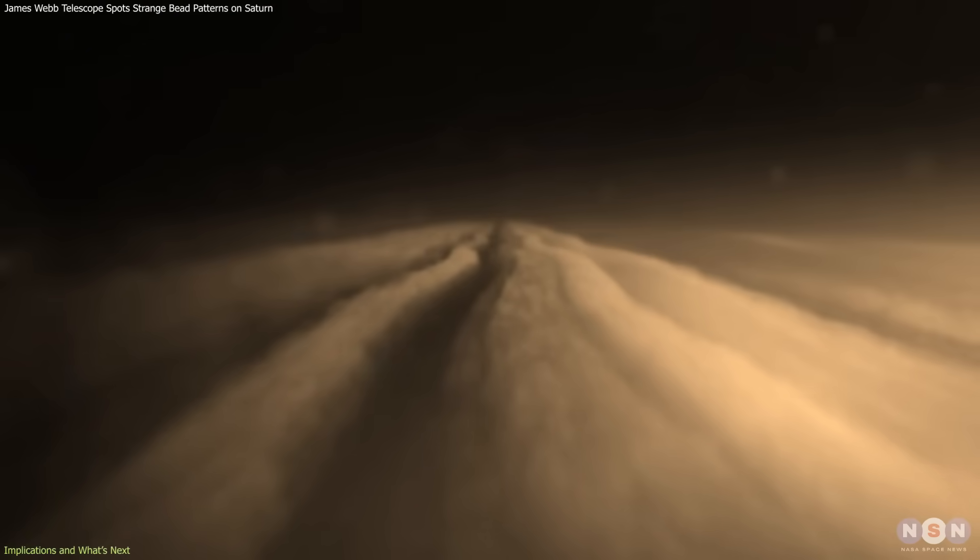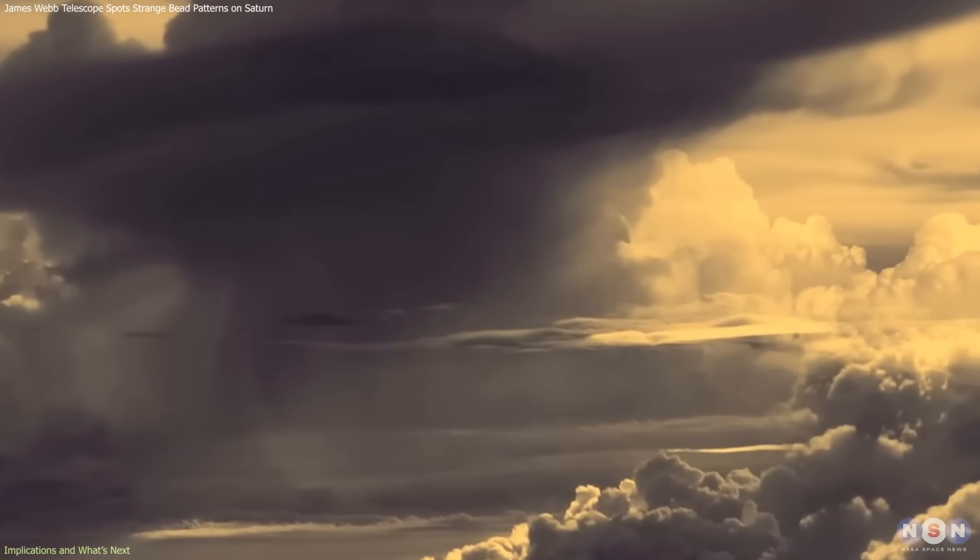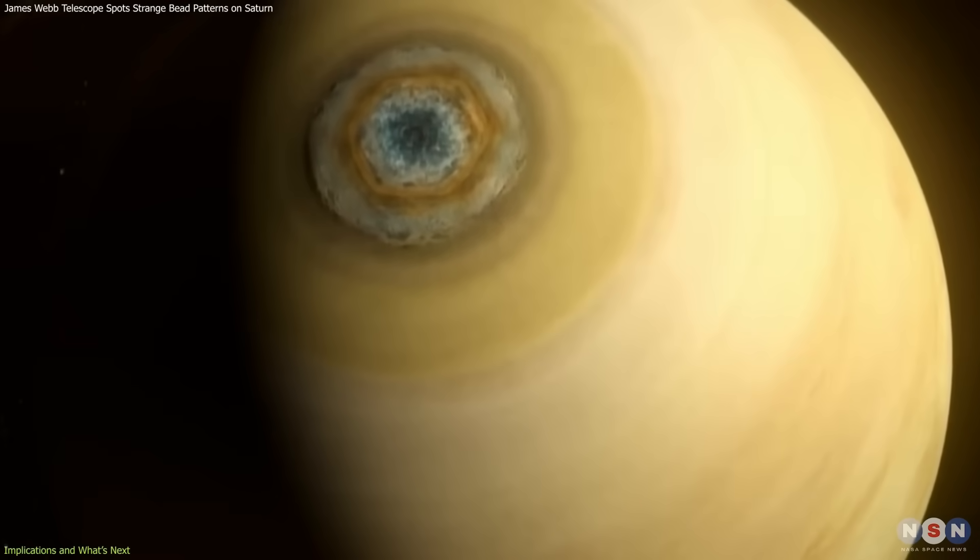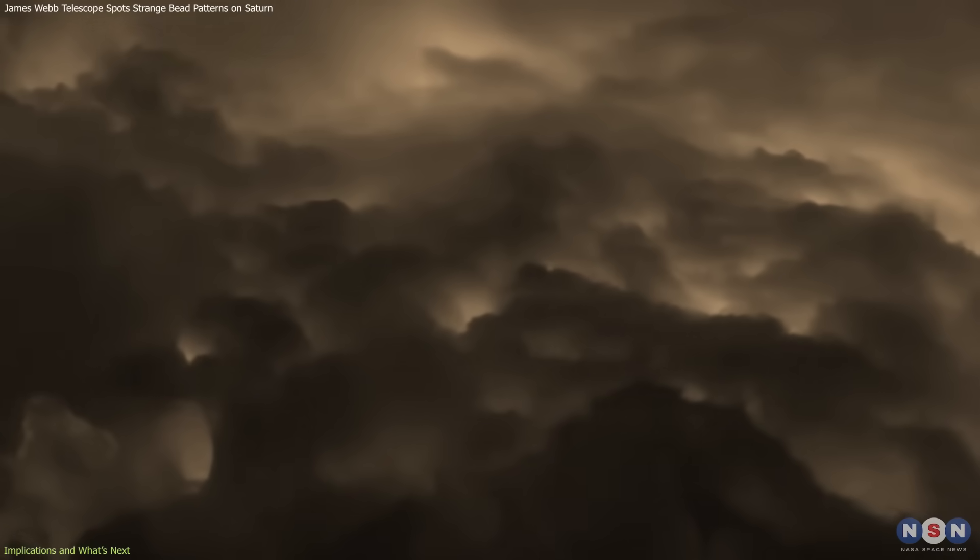connecting the auroras, stratosphere, and deeper storms. If true, this would redefine how we view the hexagon—not as an isolated surface storm, but as part of a larger system.